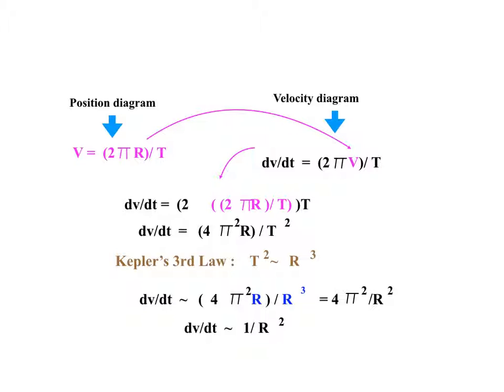We find that dv over dt is proportional to 1 over R squared. But wait a minute. dv over dt is simply the acceleration. But wait a moment again. Force is related to acceleration as follows. Since force equals mass times acceleration, force is proportional to dv over dt, and therefore force is proportional to 1 over R squared.